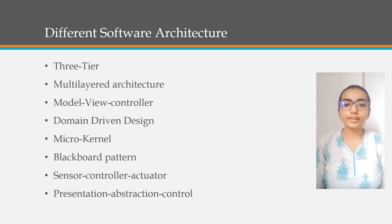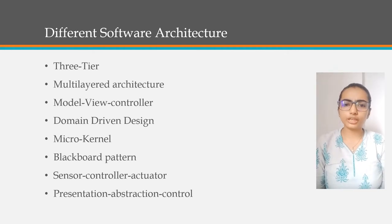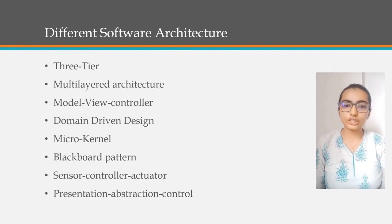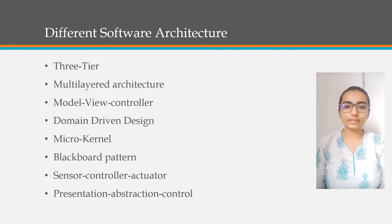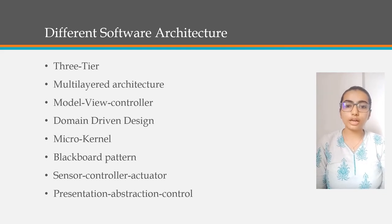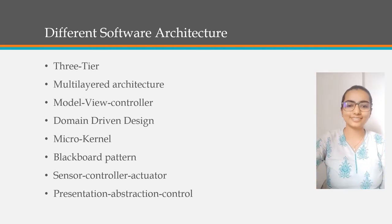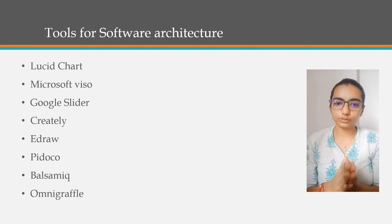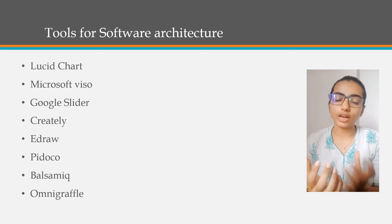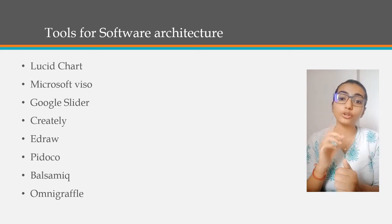Now we learn the different types of Software Architecture. There are so many types of Software Architectures. For example, 3D Trial, Model View Controller, Multi-layered Architecture, Blackboard Pattern, Micro-Kernel, Presentation Abstraction Controller, etc.